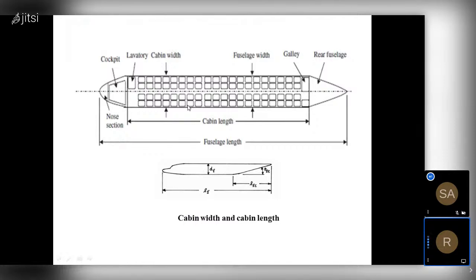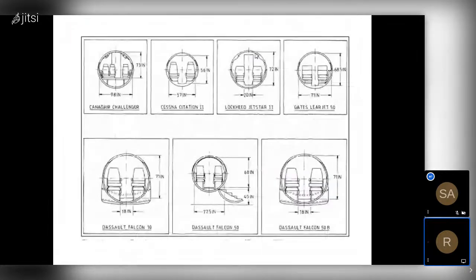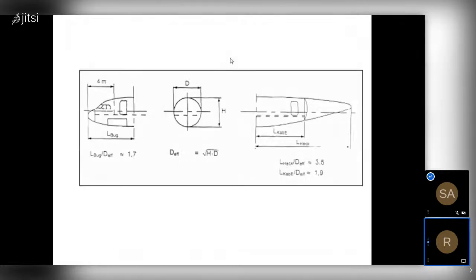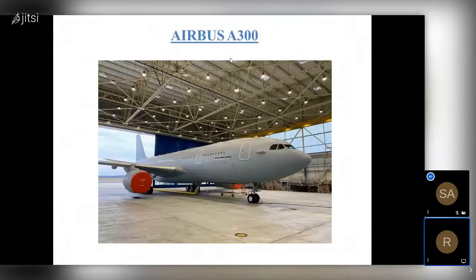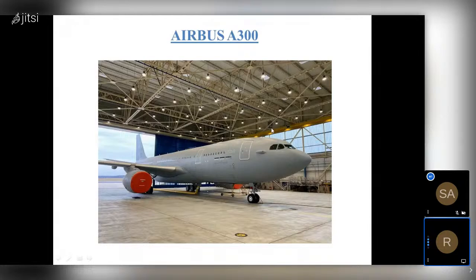We have also seen the cabin width, cabin length, and overall fuselage dimensions. Once you know all these parameters, it is very easy to design your required fuselage in the OpenVSP software. If you know all these dimensions — the complete fuselage dimensions from nose to tip — then designing your model becomes much easier.